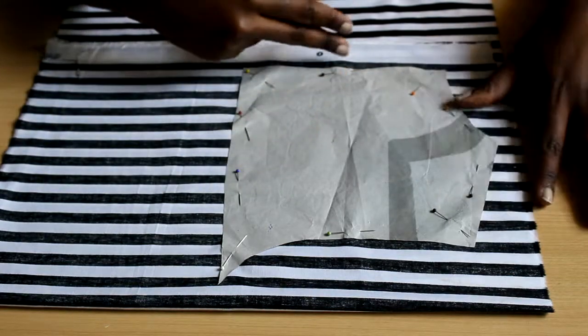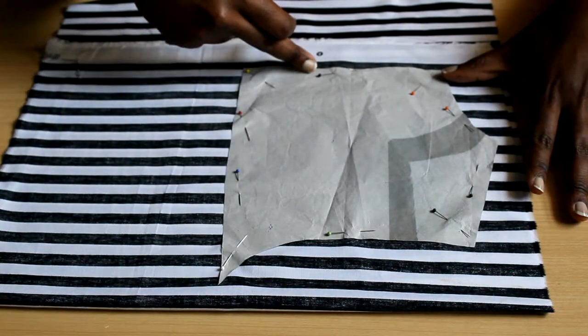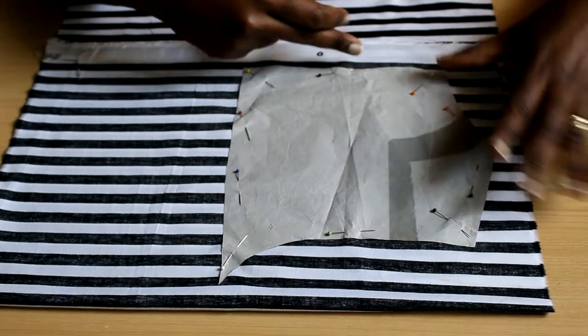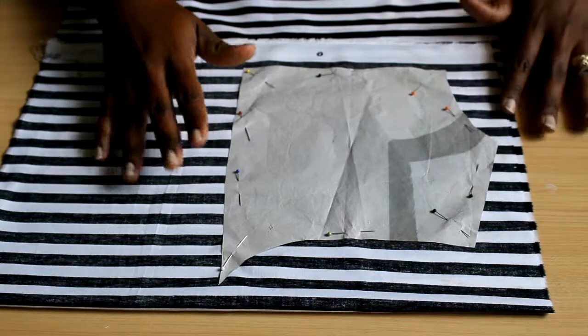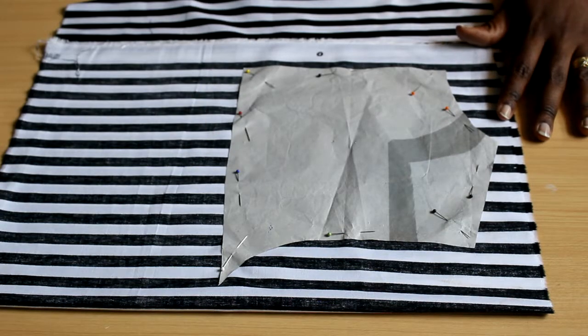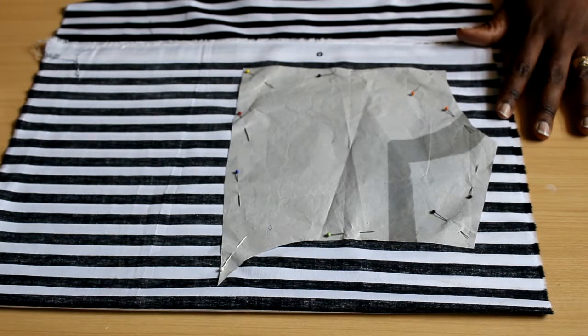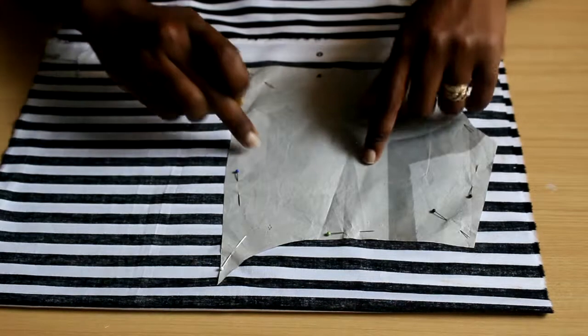So your seam allowance technically is the distance between your stitching line and the edge of the fabric once it's cut out. It will make more sense once we start sewing. But at this point, what you should note is that this is where you should add your seam allowance.